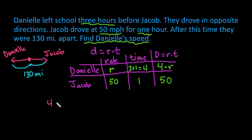So now if we put this all together, we can say that Danielle, which is 4r, plus Jacob, which is 50, equals a total distance of 130 miles. So if we solve this problem, we would just subtract 50 from both sides.